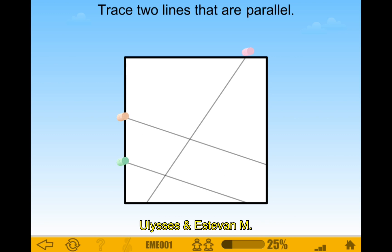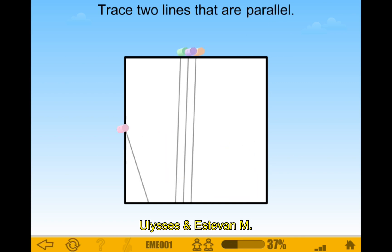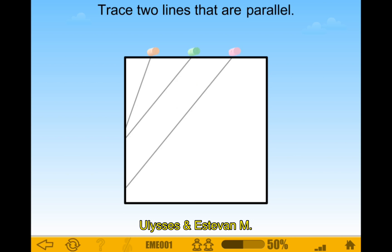Trace two lines that are parallel — these ones are. You don't want the one that intersects. You want the parallel one. There we go. That's good. Trace two lines that are parallel. There we go. Parallel. Two more lines that are parallel. Parallel is really easy, though.